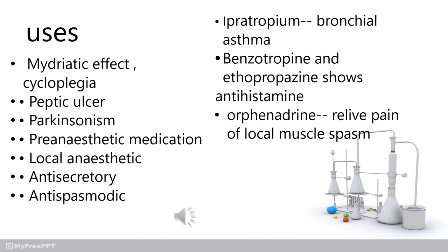Additional uses include bronchial asthma. Benztropine also has antihistamine activity, which is a common additional property. This concludes the first class on anticholinergics, covering introduction, classification, mechanism, and uses.